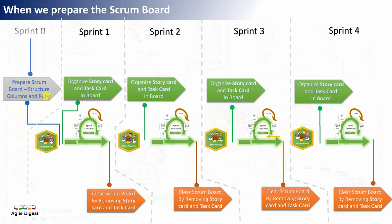The structure of the story cards can be changed within your entire project lifecycle — after four or five sprints you may identify improvement areas in the board structure. You can definitely make changes, but I always suggest making that frequency very low. Try not to make changes very frequently, so that you maintain consistency of the board structure across all team members and cross-functional teams.